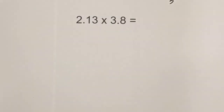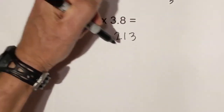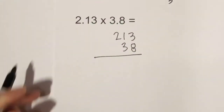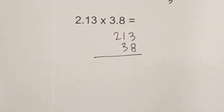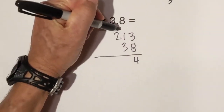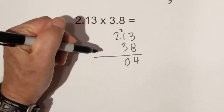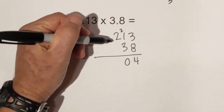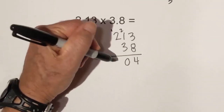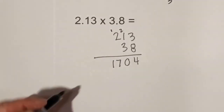Now we multiply as if there are no decimals: 213 times 38. 8 times 3 is 24, carry the 2. 8 times 1 is 8, so that will be 10 when you add the 2. Then 16 plus 1 from the 10 is 17.